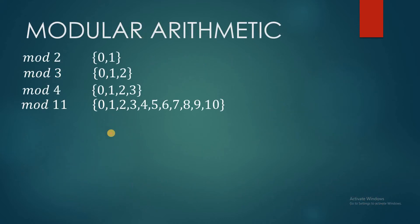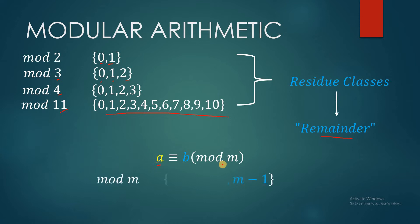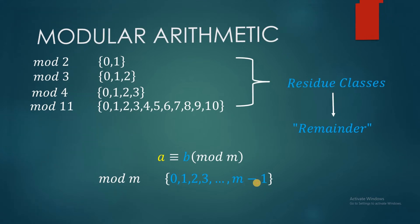Let's take a closer look at these modulo values. In modular arithmetic, these are what we call residue classes — or in simple terms, the remainder. Any number divided by 2, the remainder is always 0 or 1. Any number divided by 3, the remainder is always 0, 1, or 2. Same with modulo 4 and other modulo numbers. These sets of values are what we call the residue classes. In modular arithmetic, any integer A divided by M has residue classes between 0 and M minus 1.